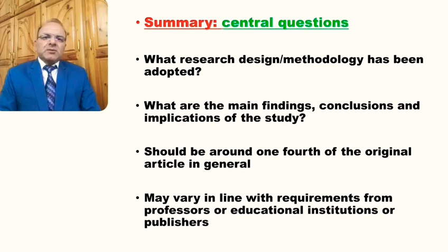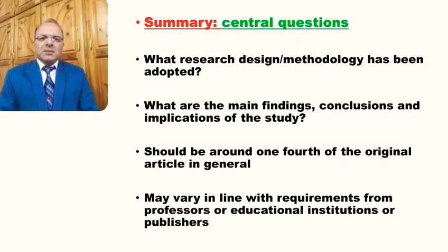People often have questions regarding the length of a summary of a research paper. Generally it should be one fourth of the original article, which means that if the article is around 6,000 words, a summary of between 1,200 to 1,500 words should be adequate. There is no universal rule, but the range of 1,000 to 1,500 words for a research paper of around 6,000 words will do justice to adequately representing the essence of the paper.